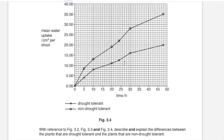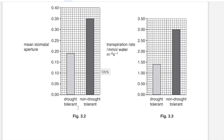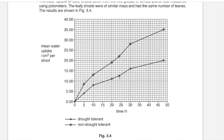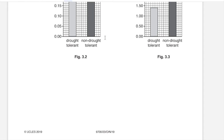For the explanation part: drought tolerant plants have a lower mean stomatal aperture, meaning the inside of the leaf is less exposed to the outside. This reduces the water potential gradient between the leaf and the air outside, which makes the rate of diffusion of water vapor from the leaf through the stomata lower. During transpiration, evaporation of water vapor from cell walls of spongy mesophyll cells into air spaces decreases, followed by a lower rate of diffusion through stomata. Because less water vapor is lost, the mean water uptake is also lower in drought tolerant plants.